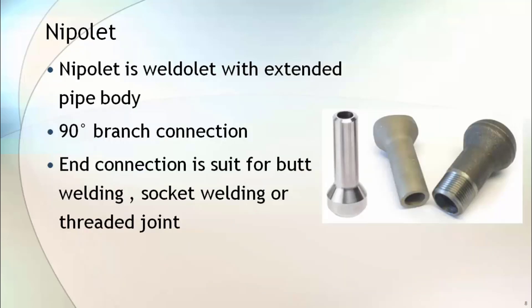Nipolet is the same as weldolet but with an extended pipe body. It is a 90-degree branch connection and comes in different types of ends suitable for butt weld type, socket type, and threaded type joint connections.